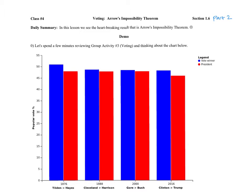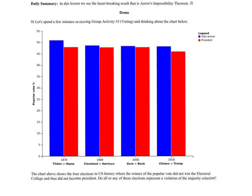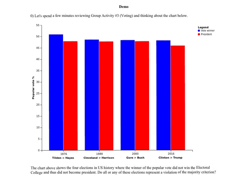This is section 1.6 part 2, demo class number 4. We're going to discuss the heartbreaking result that is Arrow's Impossibility Theorem. I'm going to skip over reviewing group activity number three because there's a whole video on those activities that you can watch.